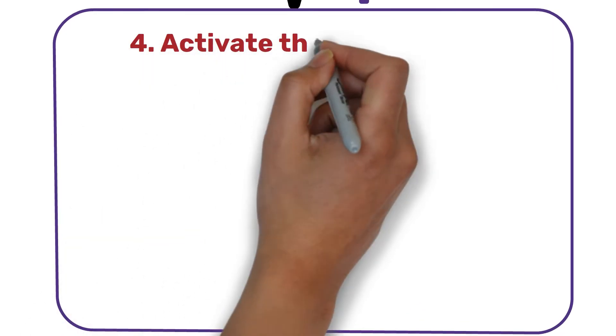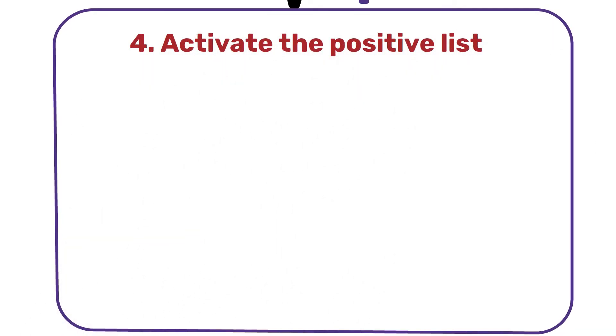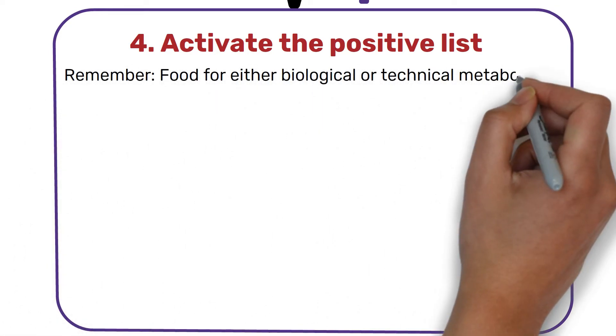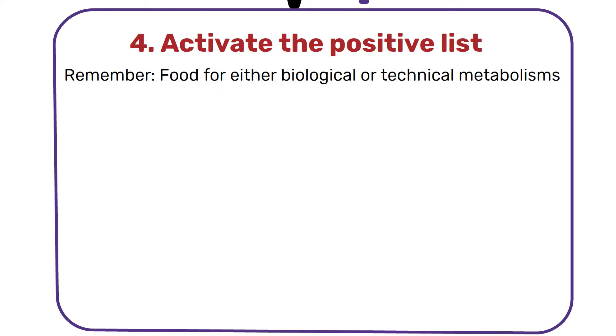Step 4: Activate the positive list. Here's where redesign begins in earnest, where we stop trying to be less bad and start figuring out how to be good. Now we set out with eco-effective principles so that the product is designed from the beginning to end to become food for either biological or technical metabolisms.